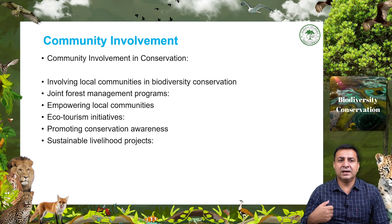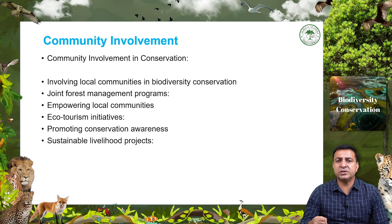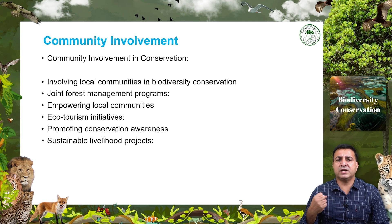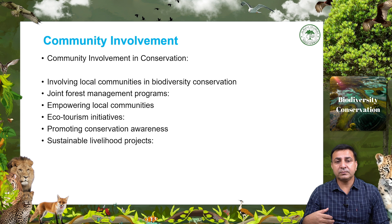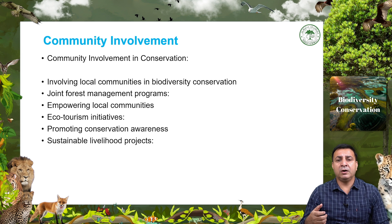Community-based conservation, involving local communities in biodiversity conservation and sustainable resource management, has shown promising results in India. Joint forest management programs, ecotourism initiatives, and sustainable livelihood projects help ease pressure on natural resources and improve local communities. India is also a party to several international organizations and conventions, including CITES, IUCN, and the Ramsar Convention, demonstrating India's commitment to protecting its rich biodiversity as a mega diverse nation.